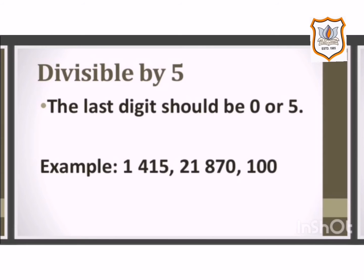The next rule is divisible by 5. If a number has 0 or 5 in its units place, then it is divisible by 5. For example, in 1415, 21870, and 100, the unit digits are 5 and 0. So they are divisible by 5.